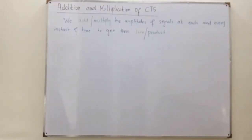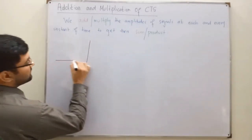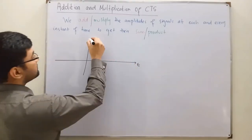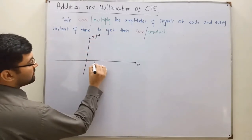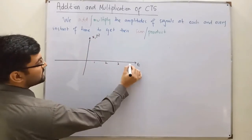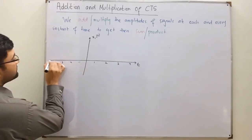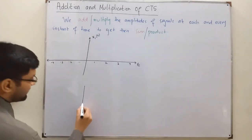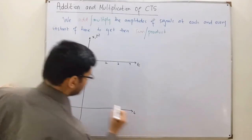I hope the basic thing is clear. Let us take an example. Let's say I have this function as x1(t). So this is 0, 1, 2, 3, 4 and negative 1, negative 2, negative 3, negative 4 on the time axis. And similarly, let us say we have another function x2(t).